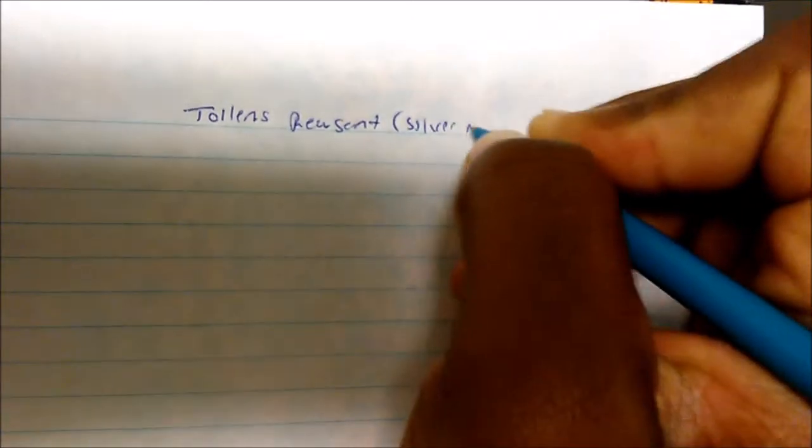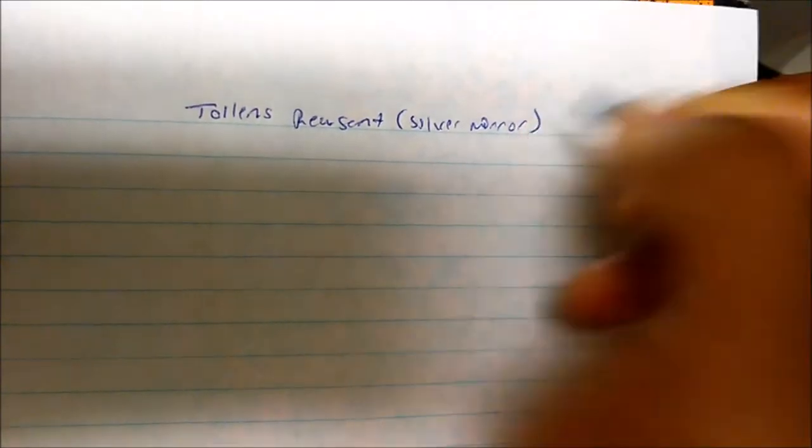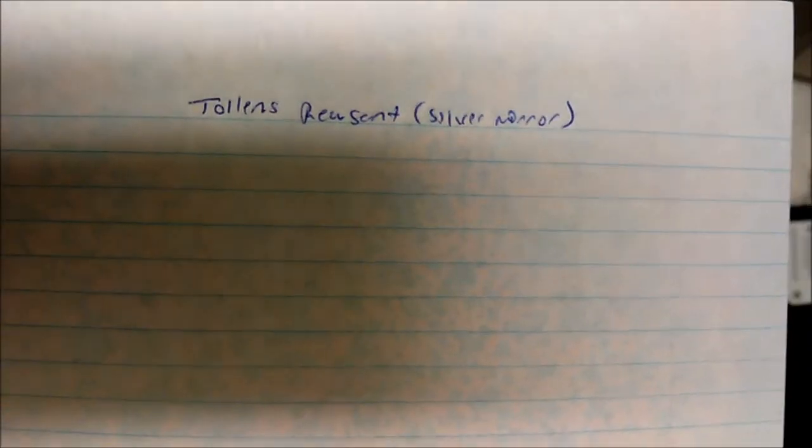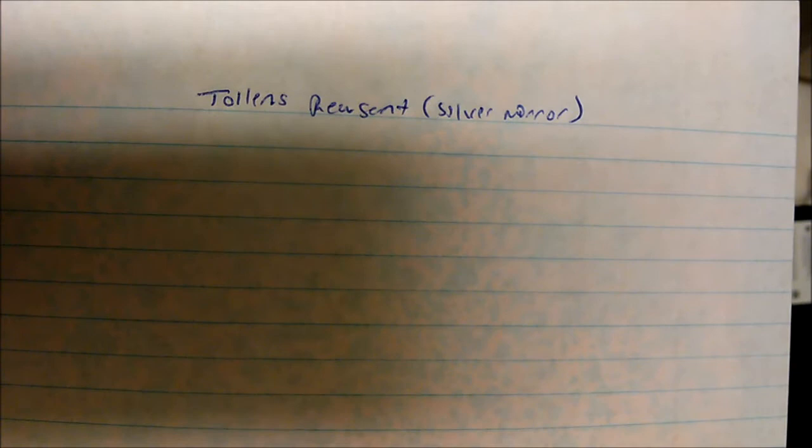In this video we're going to talk about the Tollens test, or the silver mirror test, and what it does is that it oxidizes aldehydes to the carboxylate ion.